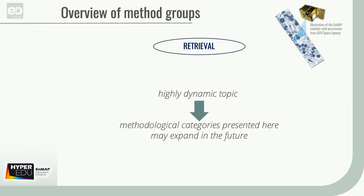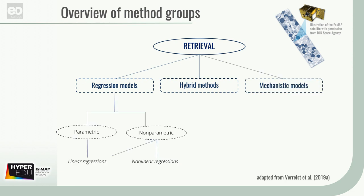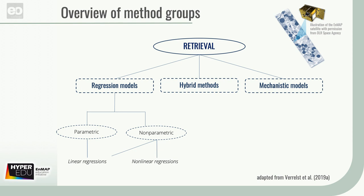Currently, this research topic is highly dynamic, with new studies exploring new methods every few months, and in the future the methodological categories presented here may expand into further subcategories and combinations thereof. For the retrieval of vegetation traits, we basically differentiate regression models, hybrid methods, and mechanistic models. Regression models include parametric as well as nonparametric methods such as linear regression and nonlinear regression. In our context, mechanistic models refer to radiative transfer models that make use of physically based inversion as well as to process models, and hybrid methods combine nonparametric methods and radiative transfer models.